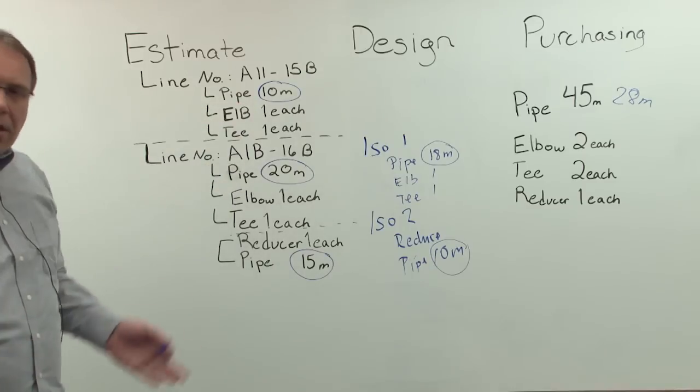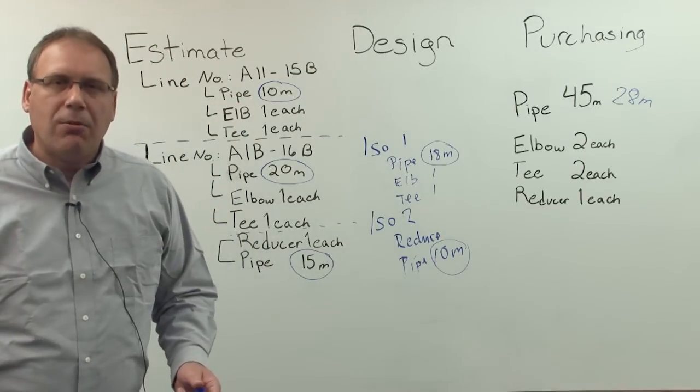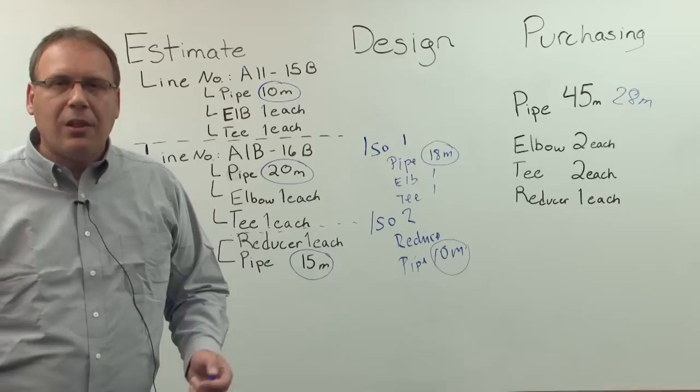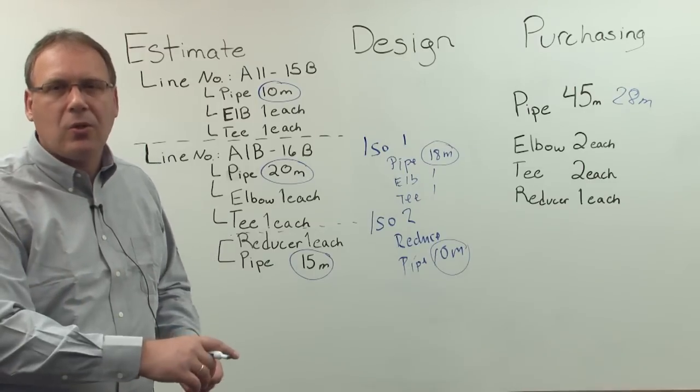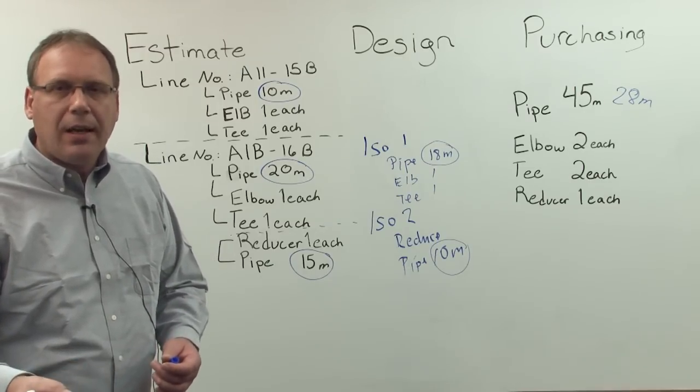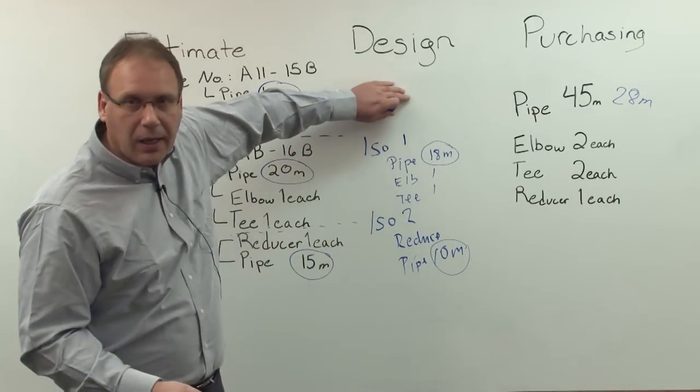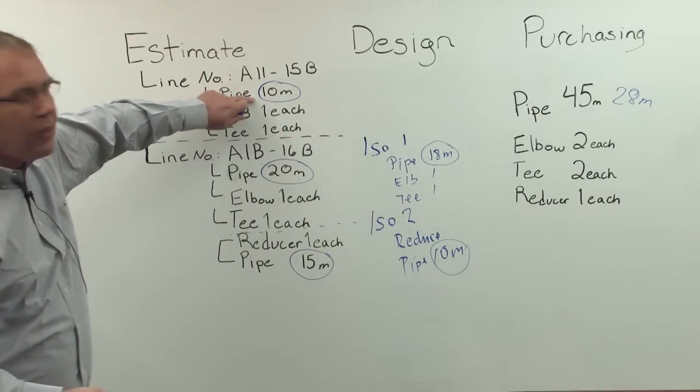So, there is a concept in materials management called best quantities. Best quantities means, you take the best quantities from the latest data you can get. So, in this case, if for a line number only an estimate is available, so no design, only estimate, take the estimate quantities.